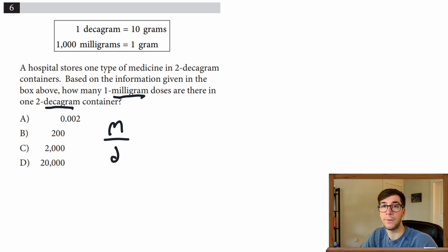To convert this, we need to set up some ratios, but the bottom line is we need to have milligrams on top and decagrams on the bottom. Looking at the question: a hospital stores one type of medicine in two-decagram containers. Based on the information given in the box above, how many one-milligram doses are in one two-decagram container?